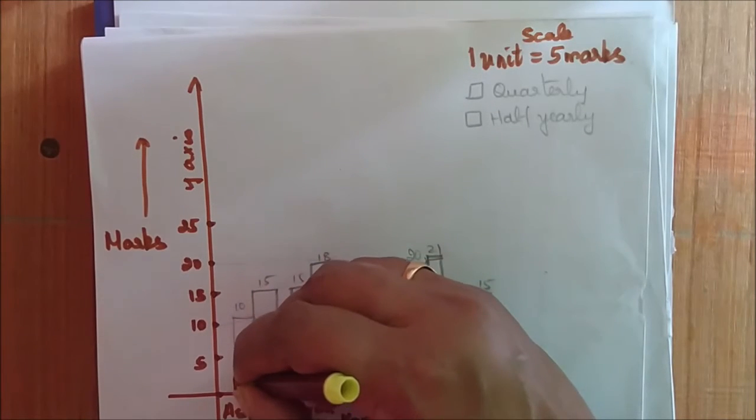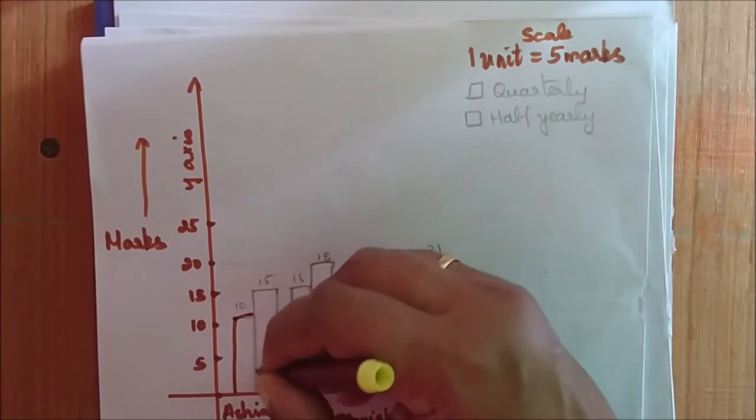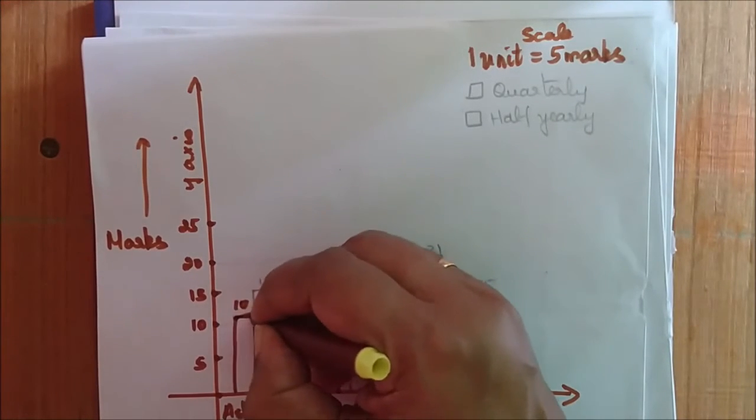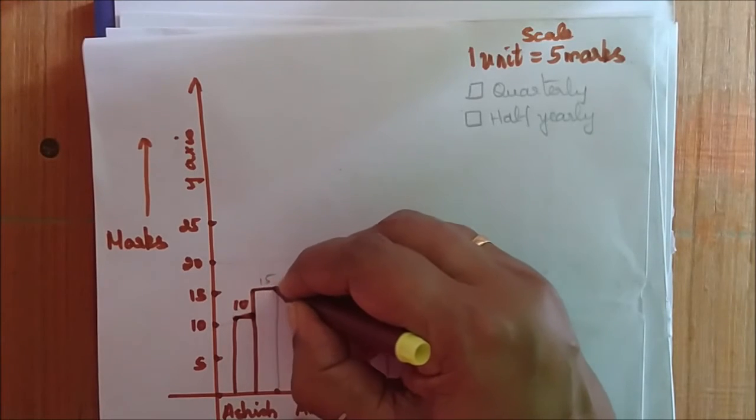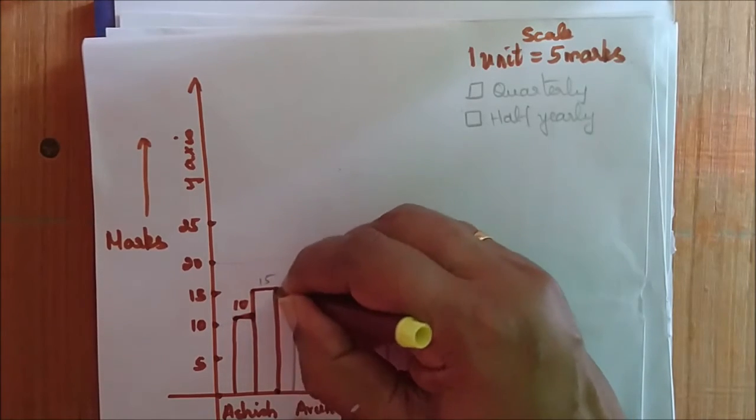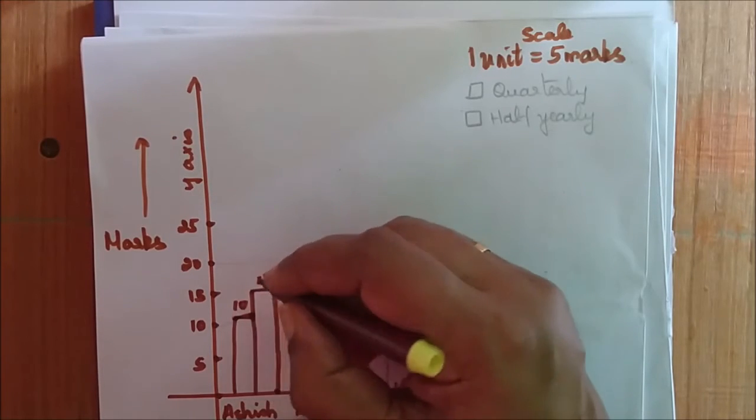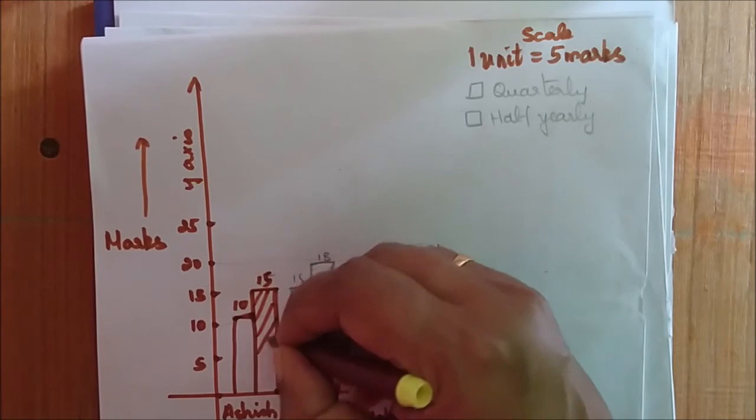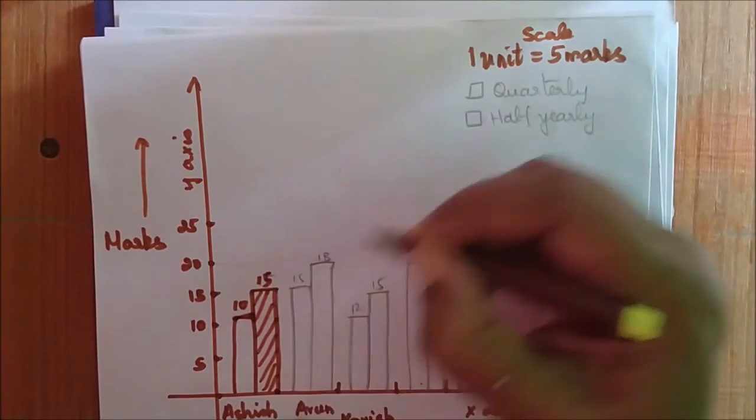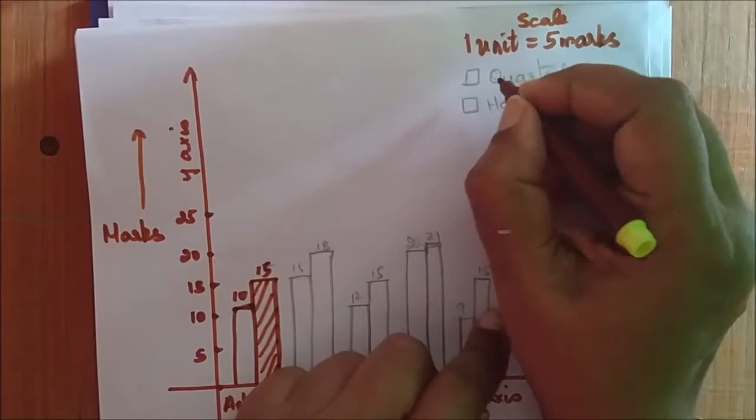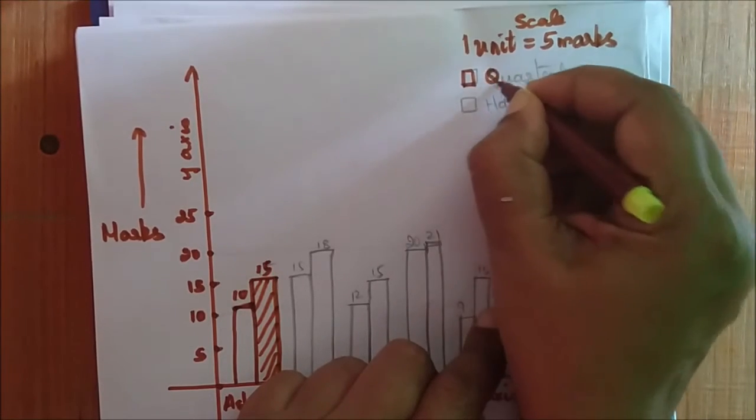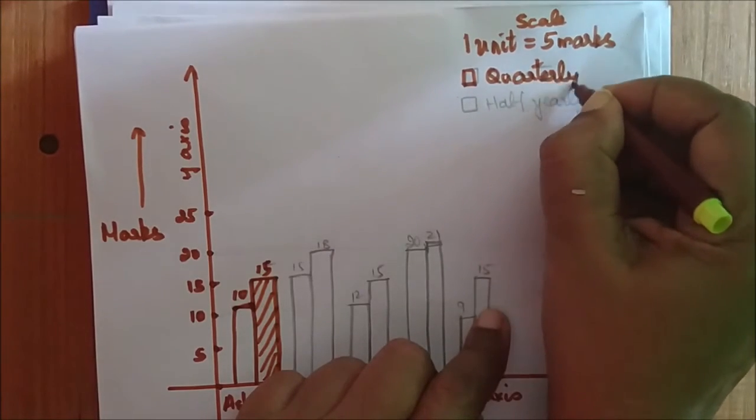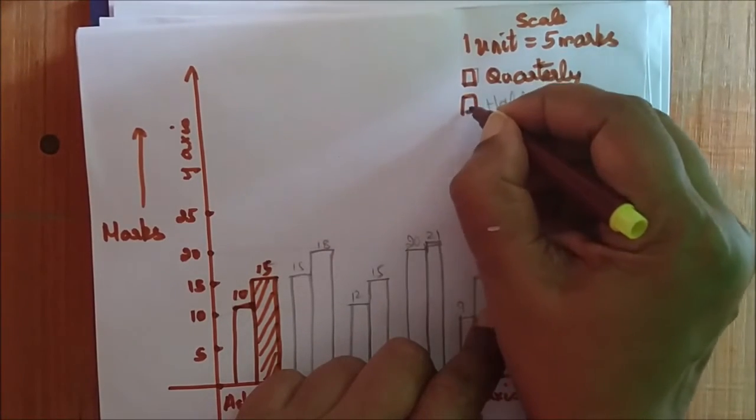First, Ashish. How much does he score in the quarterly exam? He scores 10 marks. So I have marked it along 10. And in half-yearly, he scores 15. So I have marked 15. Now to ensure the difference between quarterly and half-yearly, I have shaded my half-yearly. Similarly, here you can write this box as quarterly and this as half-yearly.